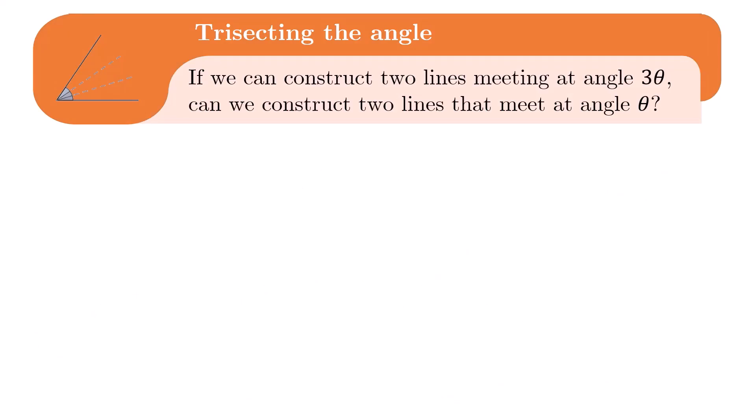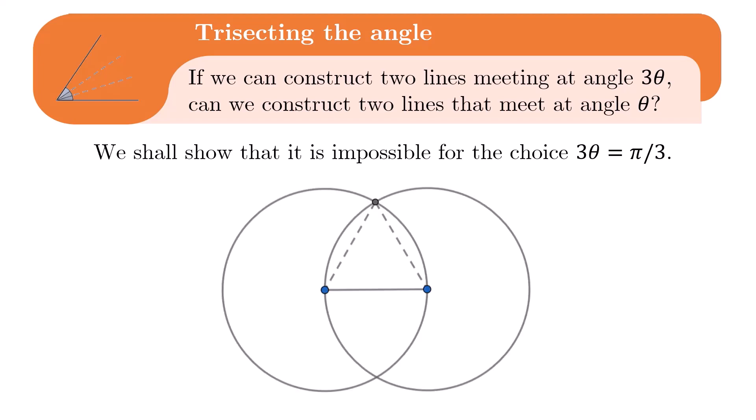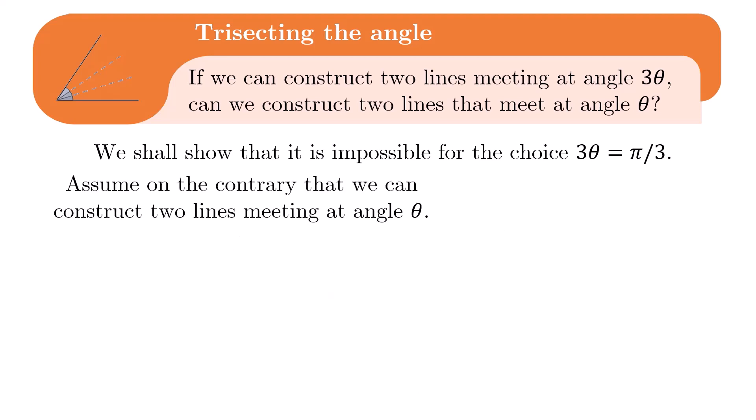Next, trisecting the angle. If we can construct two lines meeting at angle 3 theta, can we construct two lines that meet at angle theta? We will show that it is impossible for the choice 3 theta equals pi over 3, or 60 degrees. Firstly, we check that we can construct two lines meeting at 60 degrees. This can be done by constructing an equilateral triangle using the procedure shown on the screen. Well, assume on the contrary that we can construct two lines meeting at angle theta. Then, we shall now show that cosine of theta is actually constructible.